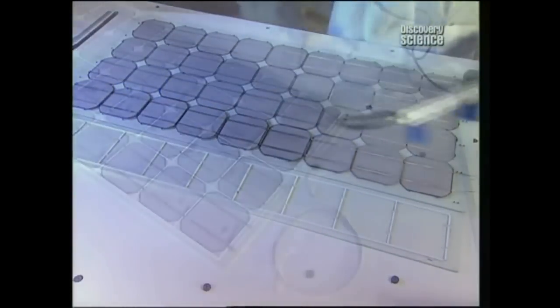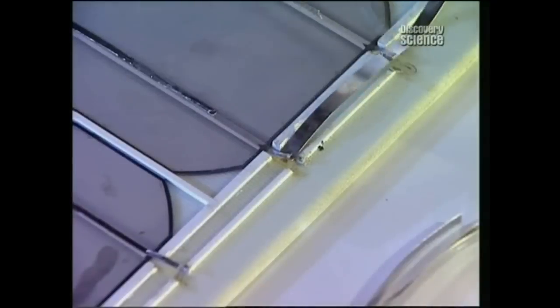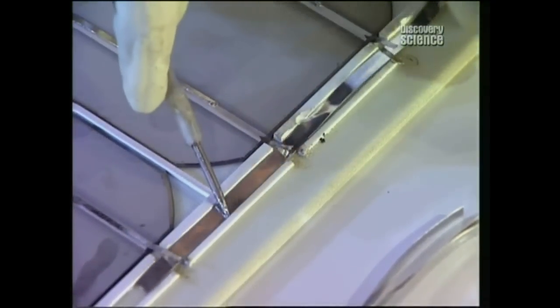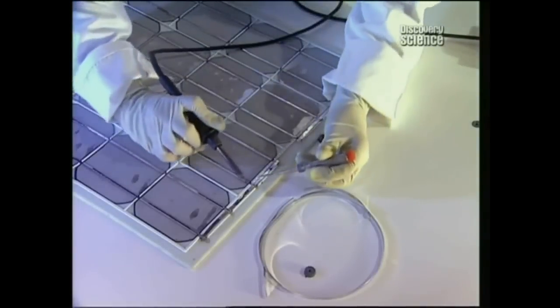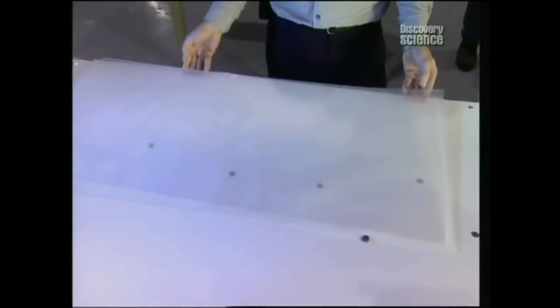The modules are placed in position. Then a metallic strip is inserted, which acts as a conductor linking all the modules. A soldered connection finishes the job. Then a transparent sheet of layered glass is set. This serves as a rigid, transparent form, which will support the modules.